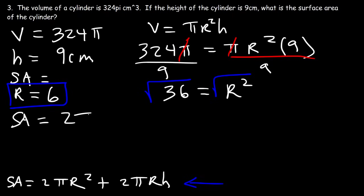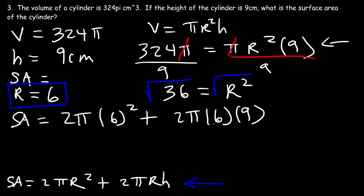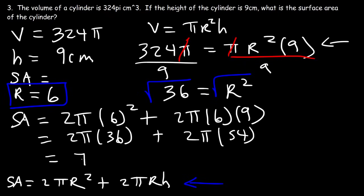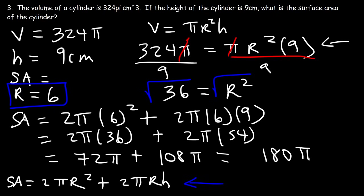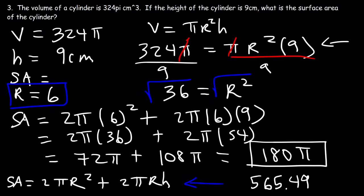Now we can find the surface area: 2 pi times 6 squared plus 2 pi times 6 times 9. 6 squared is 36, and 6 times 9 is 54. 2 times 36 is 72, and 2 times 54 is 108. 72 plus 108 is 180. So the surface area is 180 pi, which is approximately 565.49 square centimeters.